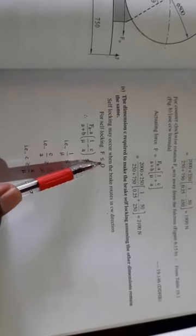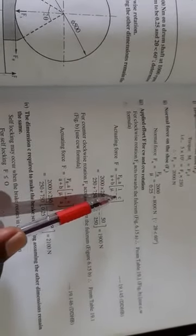So self-locking will occur for clockwise direction when F has to be less than or equal to zero. So F, the actuating force, has to be zero, or no force has to be applied for self-locking. According to clockwise direction, the F actuating force formula is Ft times A upon A plus B times 1 by mu minus C by A. Using the actuating force equation equal to zero, taking this toward the side of the equal sign, we get 1 by mu minus C by A equals to zero, or C by A equals 1 by mu, or C has to be greater than or equal to A by mu, that equals to 250 by 0.25. So C has to be 1000. If C is greater than or equal to 1000 mm, then self-locking will occur.